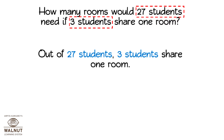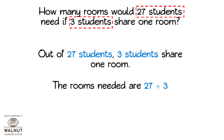So let's divide to find out how many rooms are needed. 27 divided by three is nine. That means the rooms needed are nine.